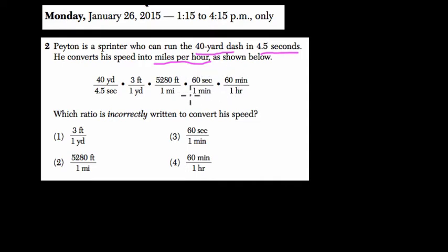So even if you're not familiar with this technique, the way we're setting up these ratios, just realize one important thing. Whatever we do, all these calculations should lead to some kind of result in the units miles per hour. So they're asking which ratio is incorrectly written to convert his speed. So that means that there's some mistake here that won't work.